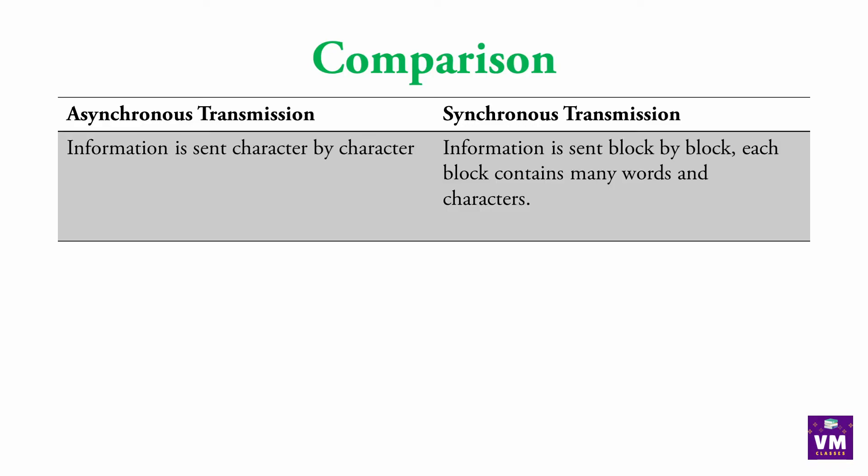Asynchronous में information is sent character by character — यानि कि एक एक character की information one by one sent होती है। Synchronous में information is sent block by block; each block contains many words and characters — तो यहाँ ज़्यादा information एक साथ send हो रही है। Synchronous में block send होता है और asynchronous में character by character send होता है।